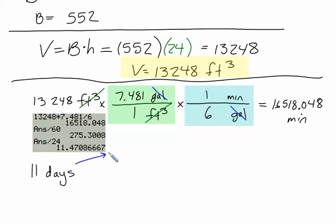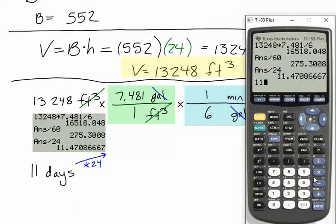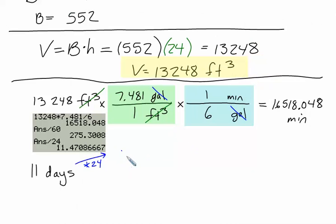So in 11 days, how many hours would there be? We're going to take 11 times 24. So we come back to our calculator. 11 times 24 is going to be 264 hours. That's how many hours are in 11 days. But this is going to take us 275 hours, so we subtract those two things, and we're going to get 11 hours.